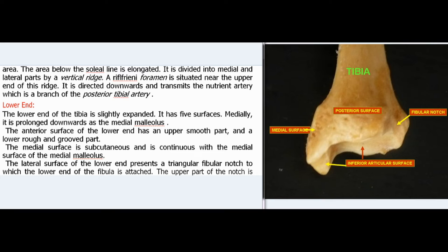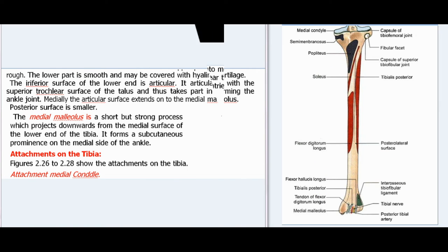The lower end of the tibia is slightly expanded with five surfaces. Medially it is prolonged downwards as the medial malleolus. The anterior surface has an upper smooth part and a lower rough and grooved part. The medial surface is subcutaneous and continuous with the medial surface of the medial malleolus. The lateral surface presents a triangular fibular notch to which the lower end of the fibula is attached; the upper part of the notch is rough, the lower part is smooth and may be covered with hyaline cartilage. The inferior surface is articular, articulating with the superior trochlear surface of the talus and thus taking part in forming the ankle joint; medially the articular surface extends onto the medial malleolus. The medial malleolus is a short but strong process projecting downwards from the medial surface of the lower end of the tibia, forming a subcutaneous prominence on the medial side of the ankle.